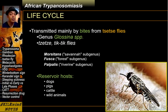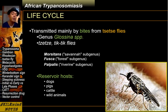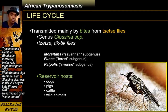There are several reservoir hosts identified for human trypanosomes, like dogs, pigs, cattle, and wild animals, but these are more predominant for the Rhodesiense type. The Gambiense type of trypanosomes only has humans as a significant reservoir host.